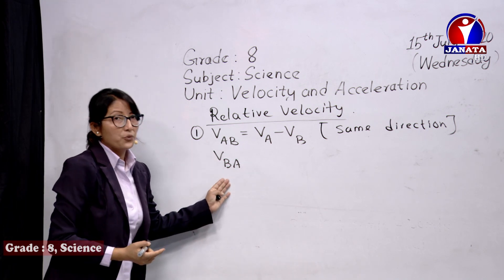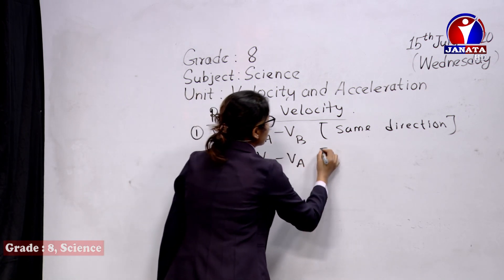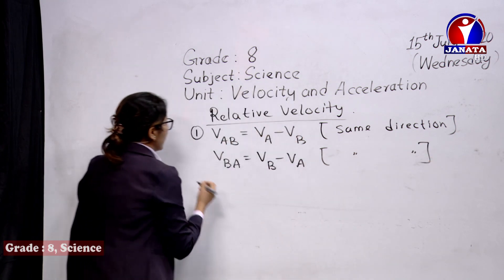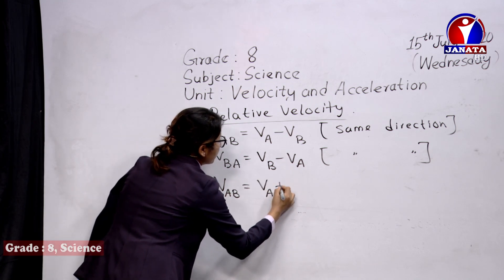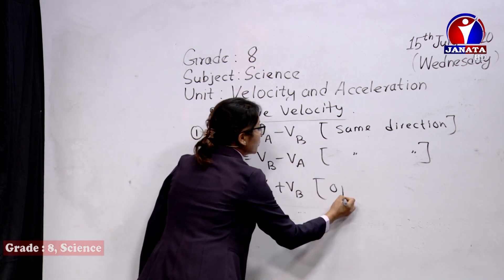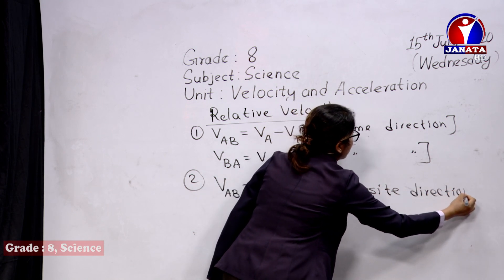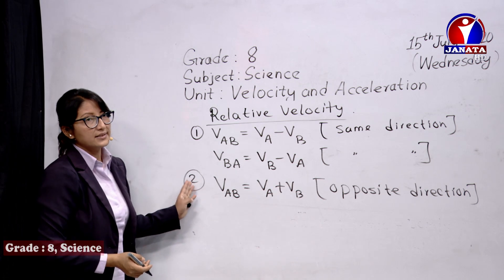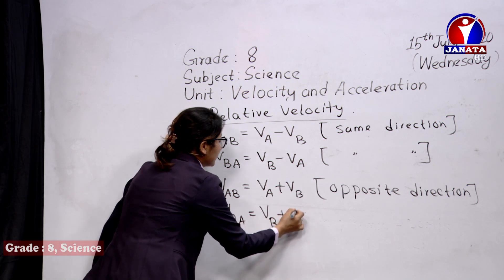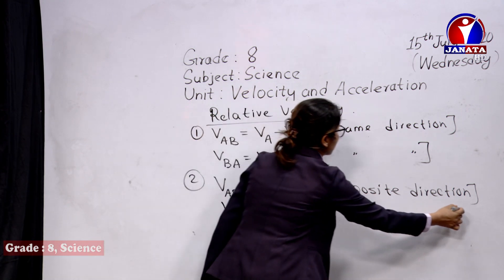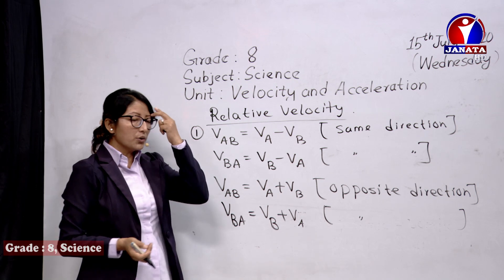To recap: if they are moving in the same direction, VAB equals VA minus VB, and VBA equals VB minus VA. If two vehicles are moving in the opposite direction, VAB equals VA plus VB, and VBA equals VB plus VA. The opposite direction can be east-west, north-south — the direction just needs to be opposite. This is all related to relative velocity.